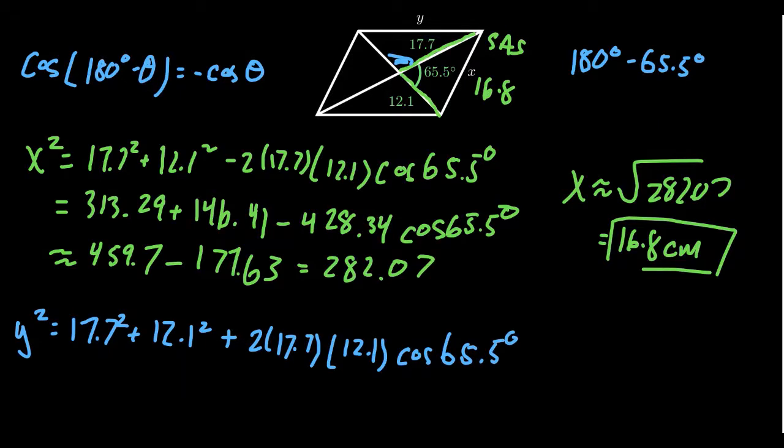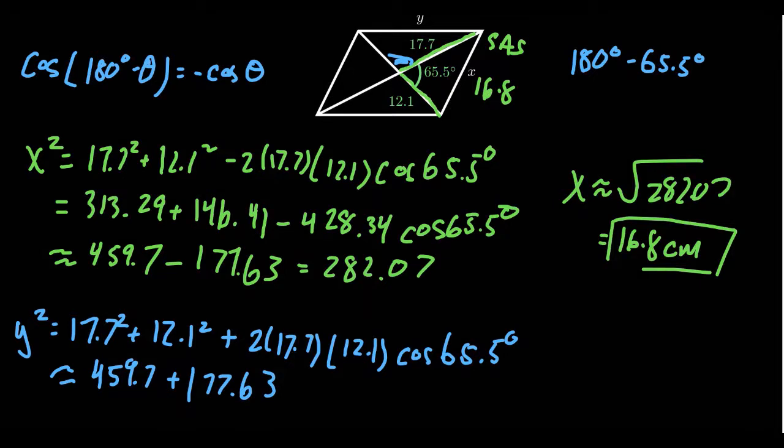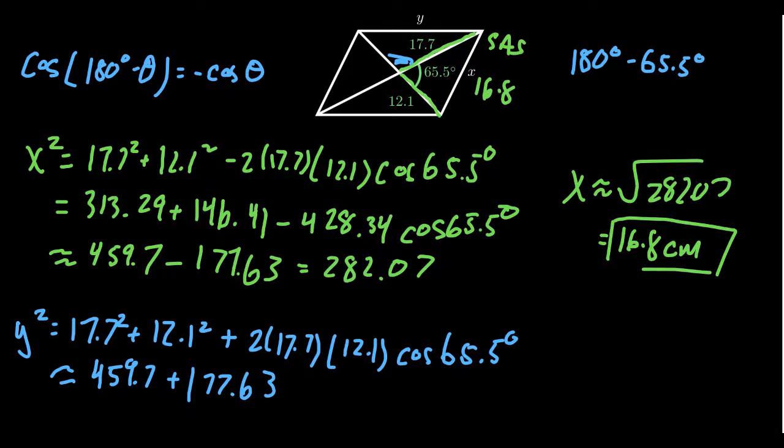And so that's going to simplify dramatically. In the end, it's basically just going to give you this 459.7 plus 177.63. So the calculations can be basically the same, which is just that difference becomes a plus now.